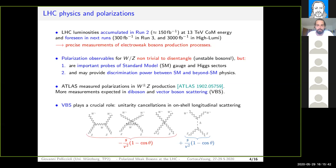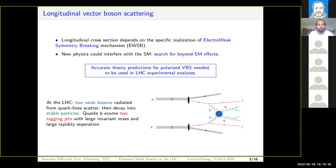Why vector boson scattering? Vector boson scattering is the golden-plated process for these searches because it has a crucial role in the polarization structure. If one considers on-shell vector bosons with longitudinal polarization mode, already at tree level we have two different contributions: one which is pure gauge, constituted by three diagrams depicted in the figure on the left, and one Higgs propagating diagram. In the large center-of-mass energy regime, the pure gauge contribution grows badly with energy, and so it is needed to have the Higgs propagation to recover unitarity in this limit. This shows that the longitudinal polarization has a strong dependence on electroweak symmetry breaking, which is responsible for giving the longitudinal polarization to W and Z bosons.